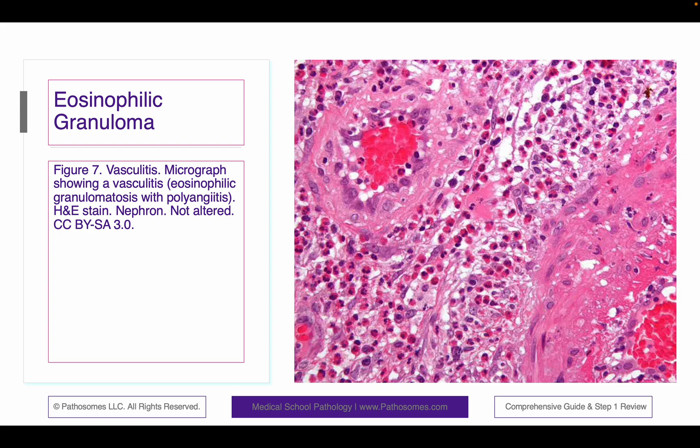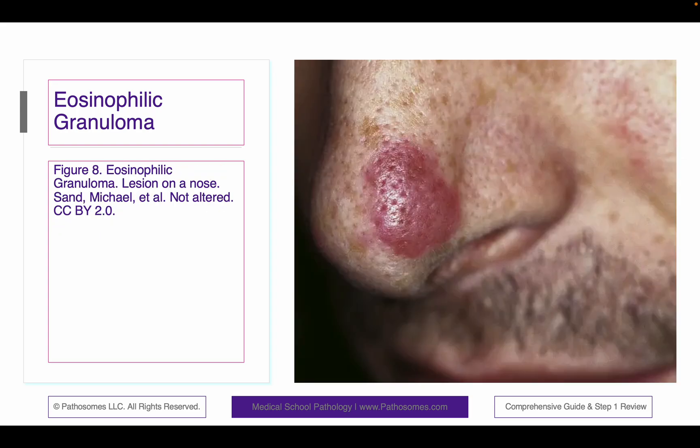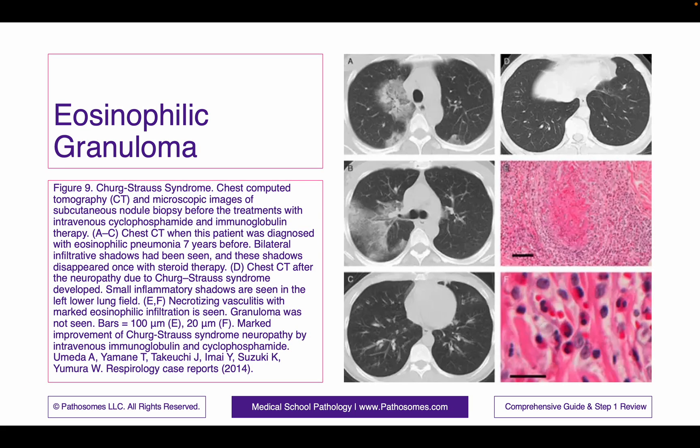With regards to a number of vasculitides, you may see eosinophilia and eosinophilic granulomas. Here's a nasal presentation in a patient that has an eosinophilic granuloma, and eosinophilic granulomas may be seen in Churg-Strauss syndrome.